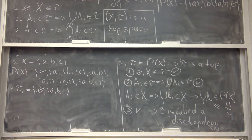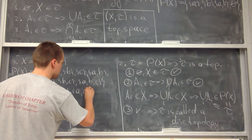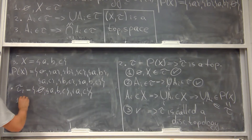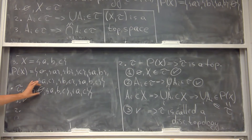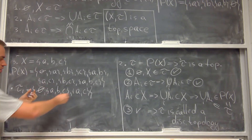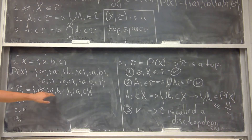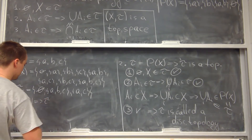So τ₁ contains the empty set, the full set {a,b,c}, and let's also add the element {a,c}. Checking the first condition: empty set and X are in τ₁ — check. For the second condition, taking all possible unions of the elements {∅, {a,b,c}, {a,c}}, you can verify they all land back in τ₁ — check. For the third condition, checking all finite intersections, they also belong to τ₁ — check. So τ₁ is a topology.